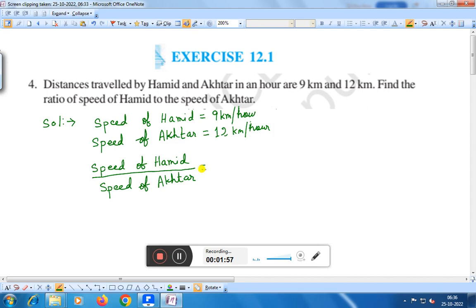Speed of Hamid is 9 km per hour and speed of Akhtar is 12 km per hour, so 9 by 12. If we convert it into the lowest terms, 3 goes into 9 and 3 times 4 is 12.